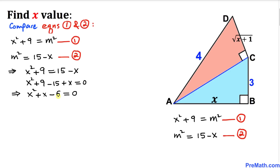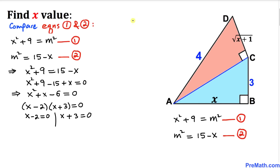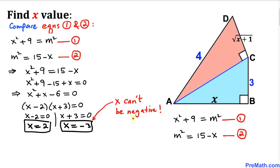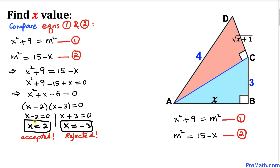Let's find the factors: (x − 2)(x + 3) = 0. Separating: x − 2 = 0 gives x = 2, and x + 3 = 0 gives x = −3. Since x represents a length and length cannot be negative, we reject x = −3 and accept x = 2.